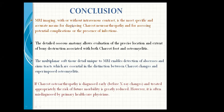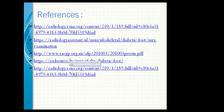Conclusion. MRI imaging with or without intravenous contrast is the most specific and accurate means for diagnosing Charcot neuro-osteoarthropathy and for assessing potential complications for the presence of infection. The detailed cross-sectional anatomy allows evaluation of precise location and extent of bone destruction associated with both Charcot foot and osteomyelitis. The multi-planar soft tissue detail unique to MRI enables detection of abscess and sinus tract, which are essential in the distinction between Charcot changes and superimposed osteomyelitis. If Charcot osteoarthropathy is diagnosed early before x-ray changes and treated appropriately, the risk of future morbidity is greatly reduced. However, it is often misdiagnosed by primary healthcare physicians. Thank you.